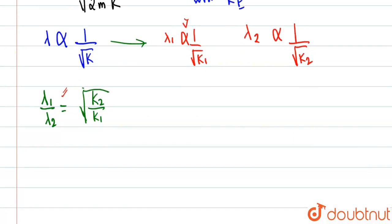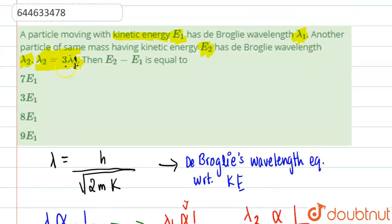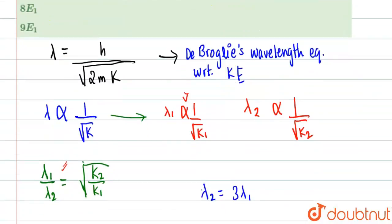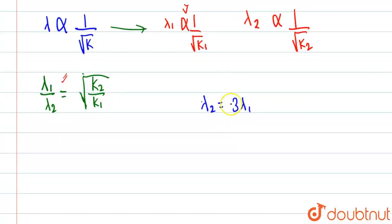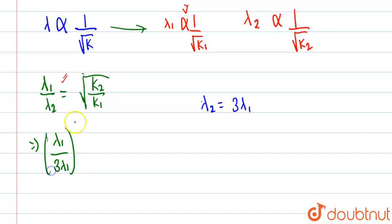Now, λ₂ is given as thrice of λ₁. We substitute λ₂ = 3λ₁ into the equation. So λ₁ divided by 3λ₁ — squaring both sides — gives us (1/3)² = k₂ / k₁, meaning 1/9 = k₂ / k₁.